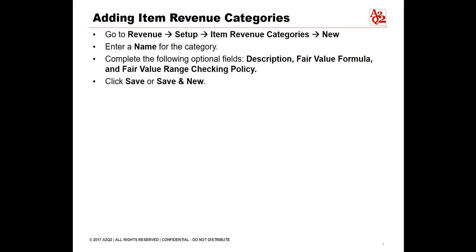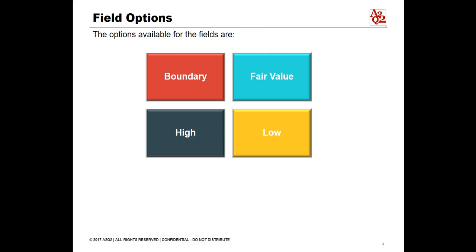Fair value range checking policy: this drop-down list is visible only when the Enable Fair Value Range Checking account preference is checked. The option you select here becomes the default for fair value price records created for this item revenue category and for items included in this category. The options are: Boundary — if the discounted sales amount is between the high and low values of the range, it is used as the calculated fair value amount; if it is outside the range, either the high or low value is used, whichever is closer to the discounted sales amount. Fair Value — if the discounted sales amount is outside the range, the base fair value is used. High — if the discounted sales amount is outside the range, the high value is used. Low — if the discounted sales amount is outside the range, the low value is used.